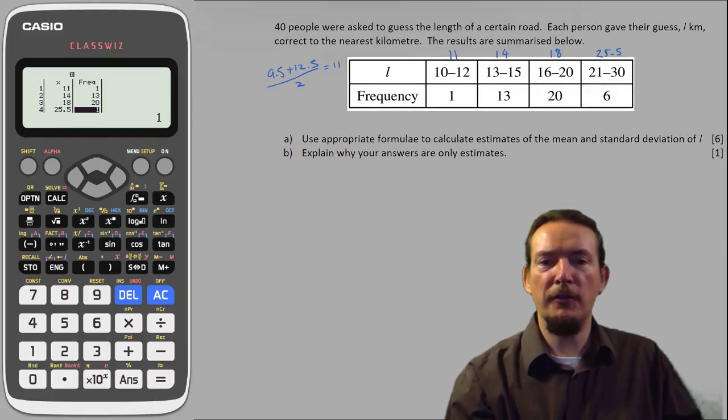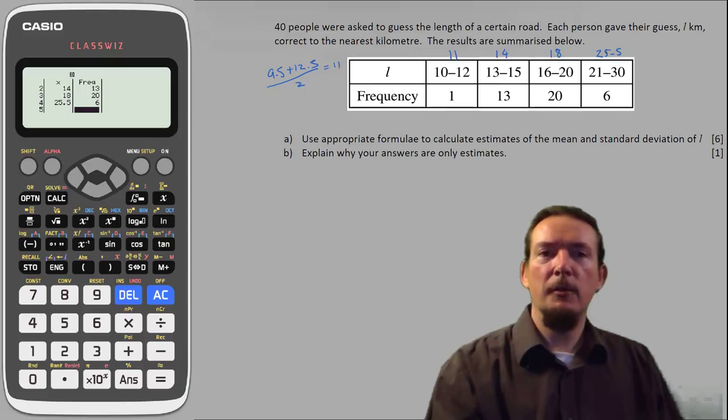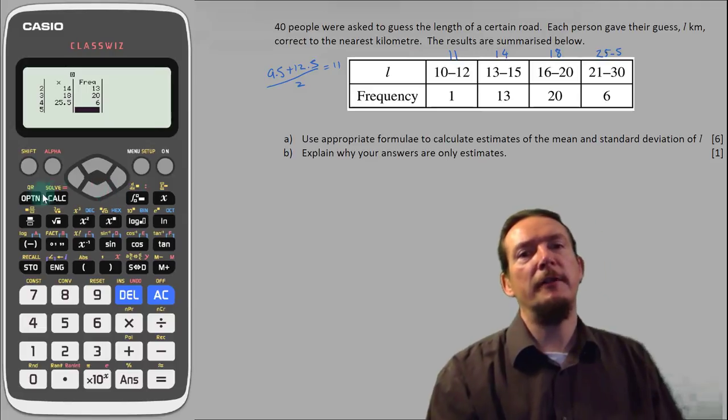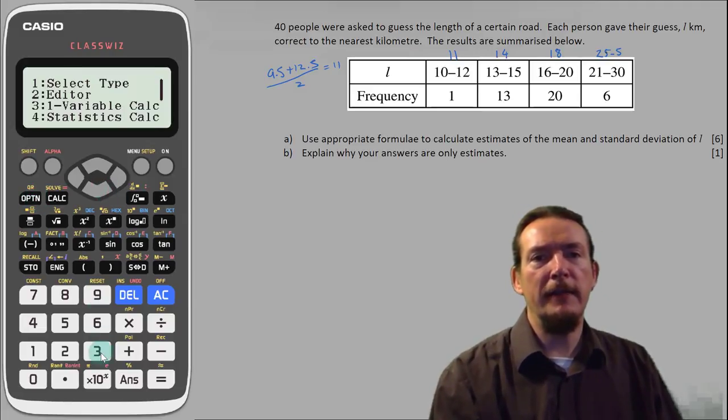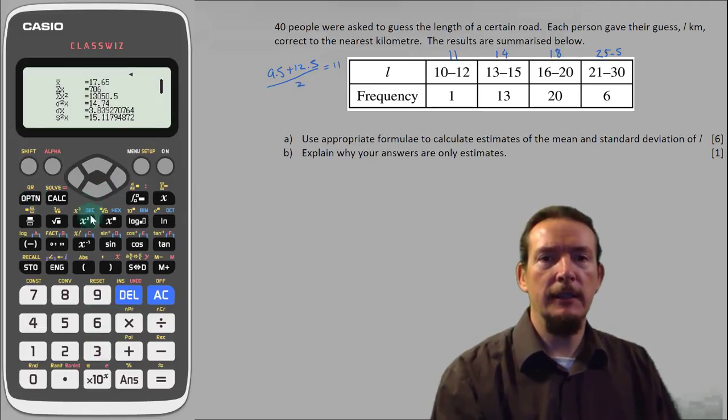So the hard work done, all we need to do now is ask the calculator to show us the stats. With the ClassWiz we do this by pressing option and then 3 for one variable calc. It happily churns out lots of values for us.